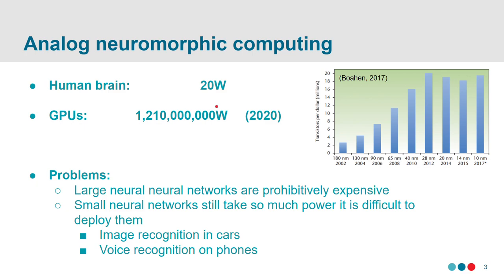We're used to computers getting better and faster over time, so maybe this is just a problem where I wait a few years. But one interesting thing that indicates that may not be the case — at least with existing computing chips — is this plot showing the number of transistors and computing power per dollar over time. That used to keep increasing, but somewhere around 2010-2012 it seems to flatten off. This means large neural networks are currently pretty prohibitively expensive to run.